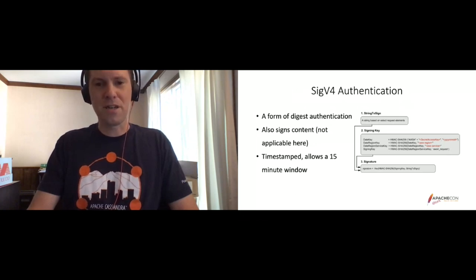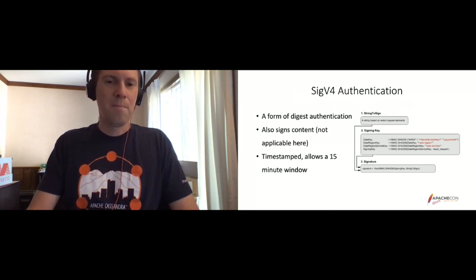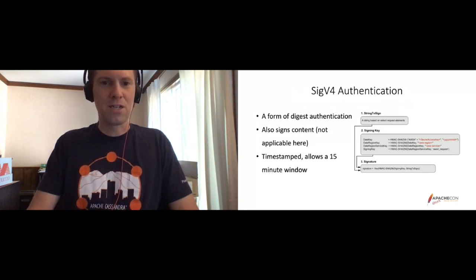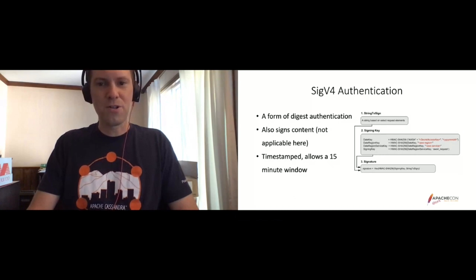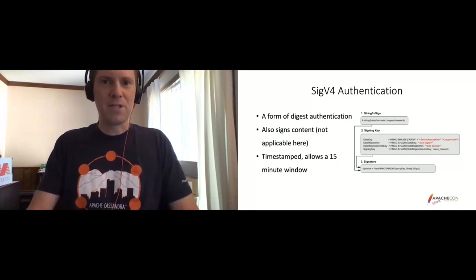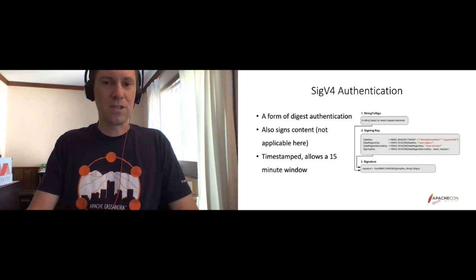SIG V4 is a form of digest authentication. That means that instead of sending a username and password, an identity and credentials are used to essentially create a signature or a digest. If you've ever used digest authentication for HTTP or heard of CRAM-MD5, this is a common way of preserving secrets without having to pass them along. For SIG V4, it can also sign the content as well as metadata around requests, and there's a timestamp included as part of the signature. That timestamp is essentially used to prevent replay attacks — you can bound how long a signature is valid for.